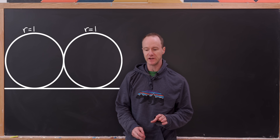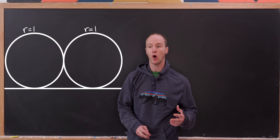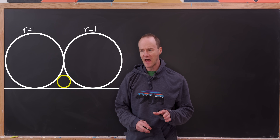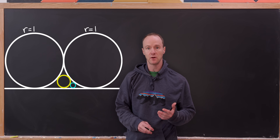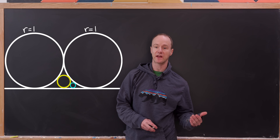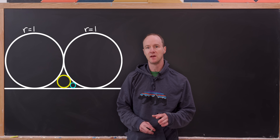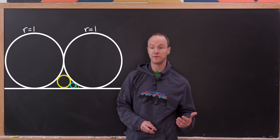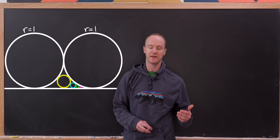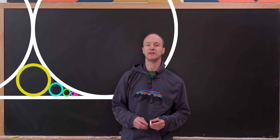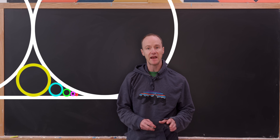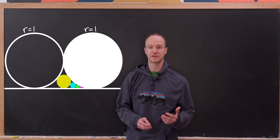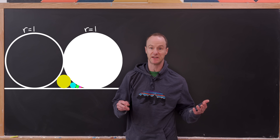Now what we want to do is inscribe a circle in the opening between these three figures. After that we'll inscribe a circle between the smaller circle, the straight line, and the circle of radius 1. Then we'll inscribe a circle between the smallest circle so far and the straight line and the circle of radius 1, and then continue doing this on and on. We'll shade one of the circles of radius 1 and all of the circles that we've inscribed in this scenario.